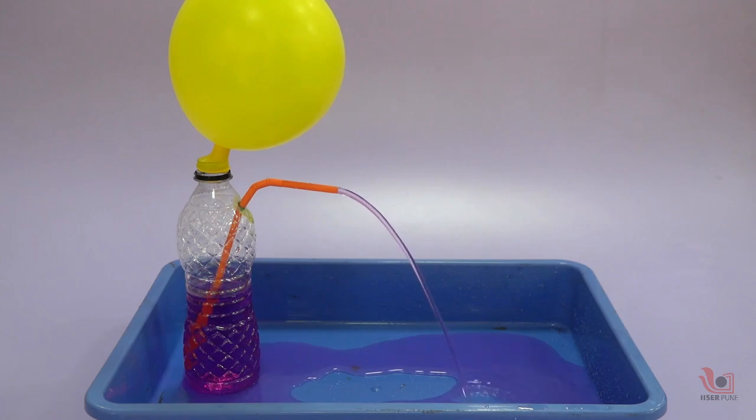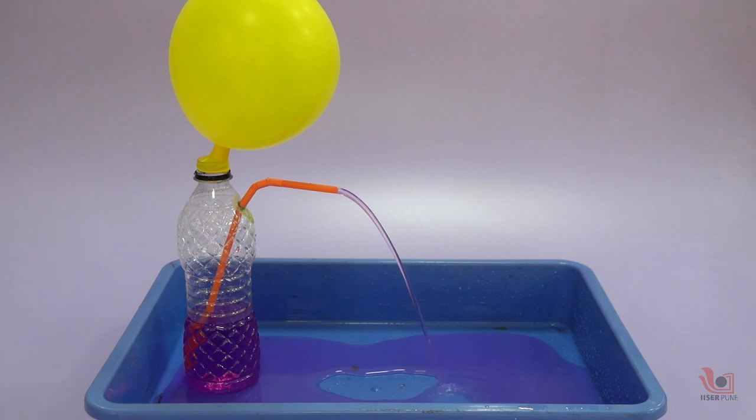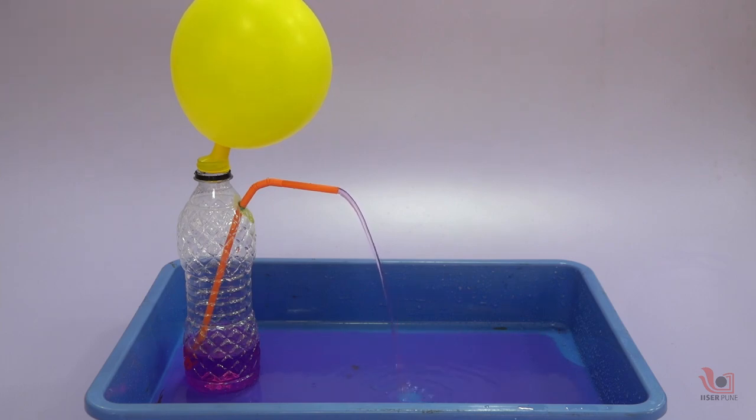Now let's understand how this fountain was formed. When we blow up the balloon, the air goes from our lungs and hits the wall of the balloon. This creates air pressure in the balloon that forces the balloon to inflate.